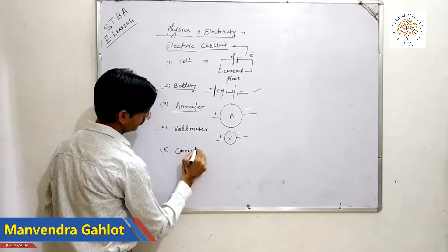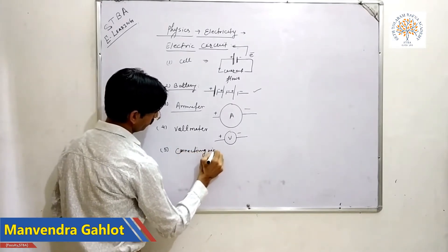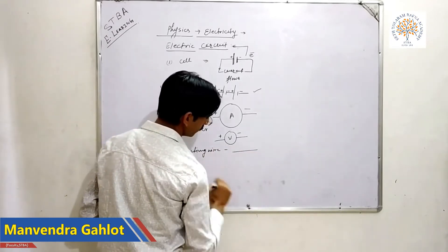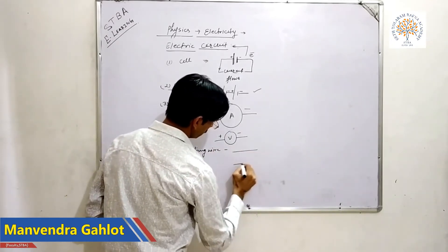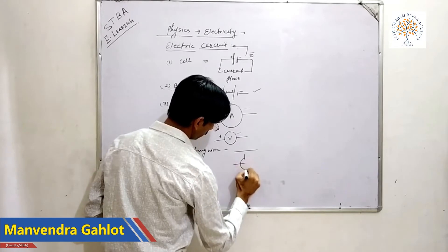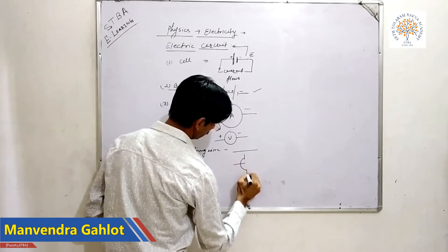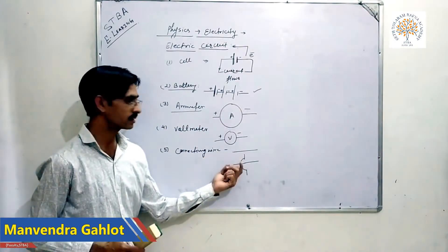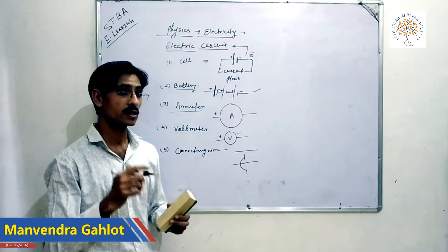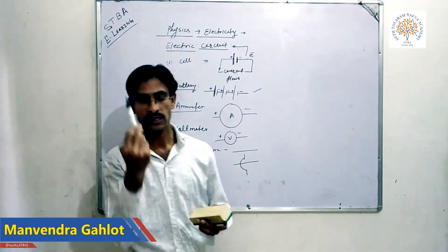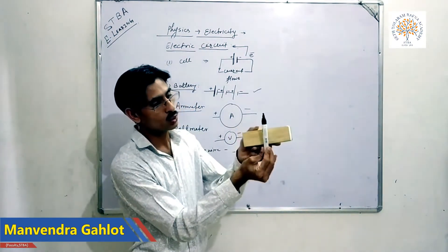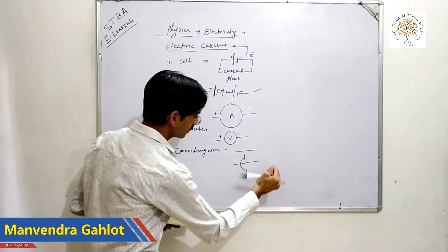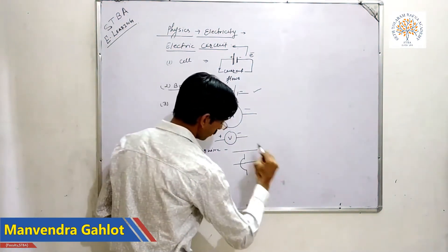Fifth: connecting wire. There are two symbols — one for a directly connected wire, and one for an overlapping wire, meaning one wire passes over another.